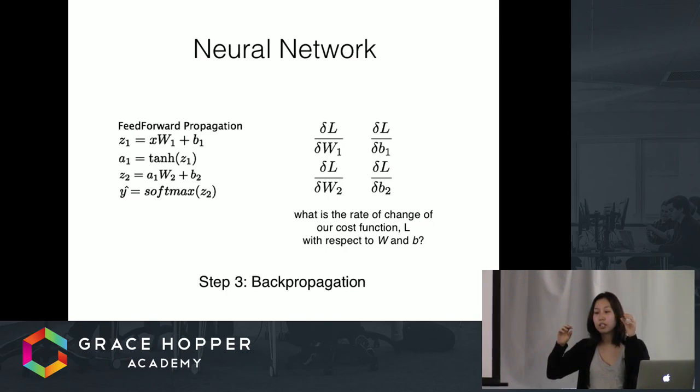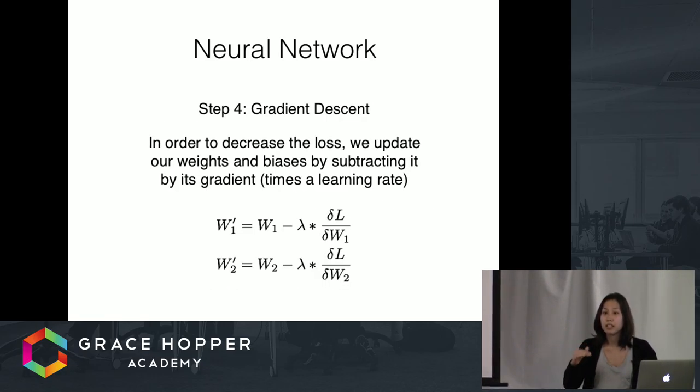The derivative is going to calculate how much we can change the weights and biases by. By changing these weights and biases, it's going to also affect the change of the predicted output and hence change the loss or the error rate.